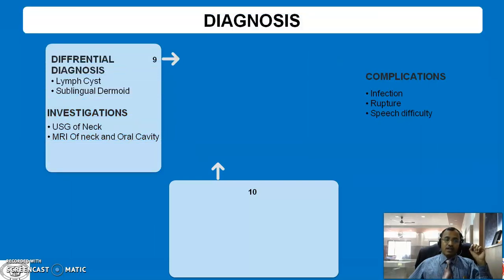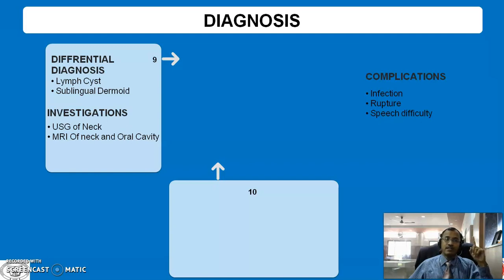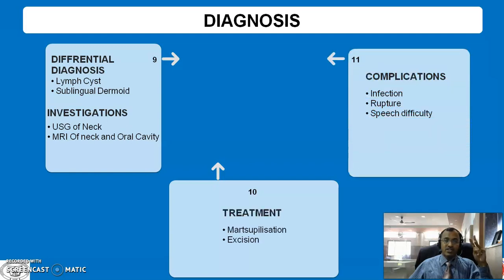Apart from clinical diagnosis, one can diagnose this condition on USG or MRI, usually if it is a plunging ranula with cervical extension. The differential diagnosis of such a cystic swelling includes lymph cyst and sublingual dermoid. The complications of such cysts are infection, rupture, and speech difficulty.